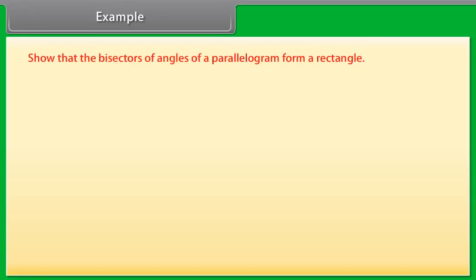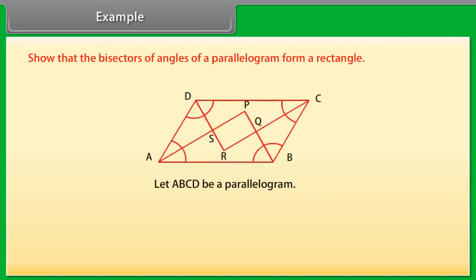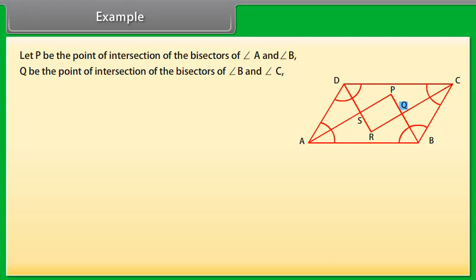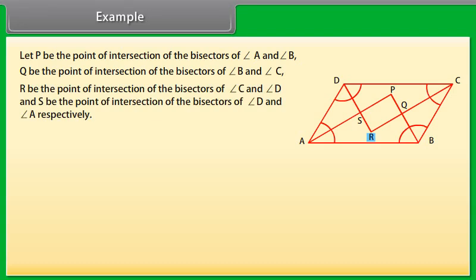Example: Show that the bisectors of angles of a parallelogram form a rectangle. Let ABCD be a parallelogram. Let P be the point of intersection of the bisectors of angle A and angle B, Q be the intersection of bisectors of angle B and angle C, R be the intersection of bisectors of angle C and angle D, and S be the intersection of bisectors of angle D and angle A.